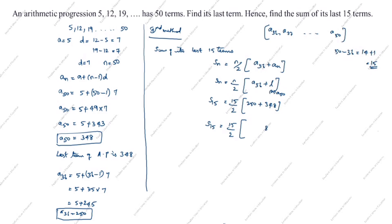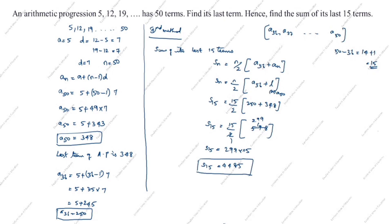250 plus 348 is 598. S₁₅ is equal to 15 by 2 into 598, which gives 15 into 299, equal to 4485. This is the sum of its last 15 terms by the second method. The first method answer and second method answer are the same, but the concept is different. You can follow whichever method is easiest for you. Thanks for watching this video.